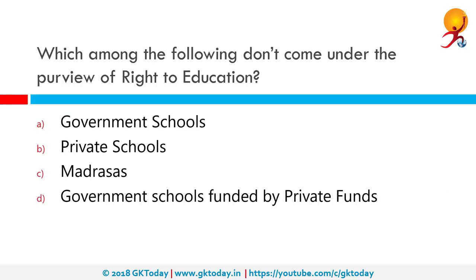Which among the following don't come under the purview of the Right to Education? The correct answer is Madrasas. The Right to Education or RTE Act is not applicable to aided or unaided minority schools as per the Supreme Court ruling of 6th May 2014. Although the RTE Act is constitutionally valid, such schools cannot be obligated to reserve 25% of seats for students from socially and economically weaker sections of society.